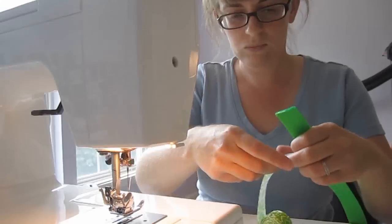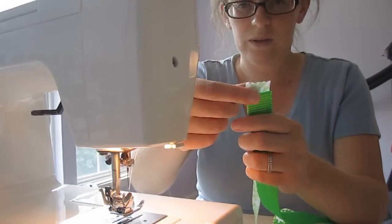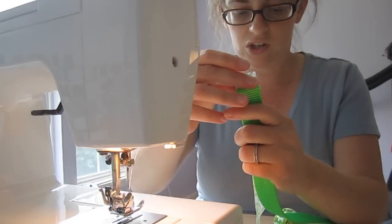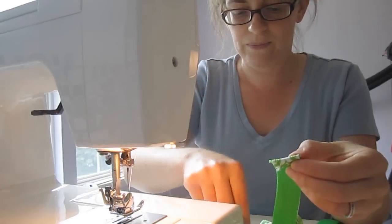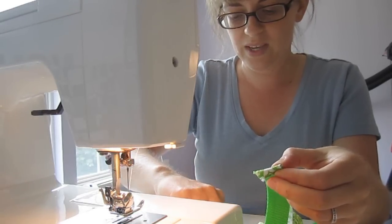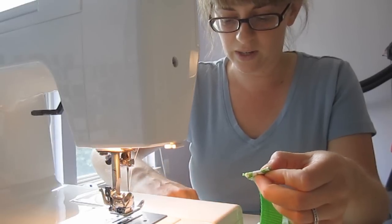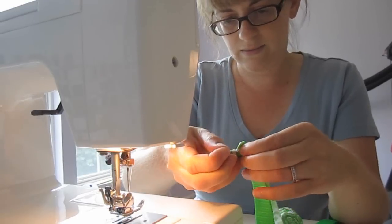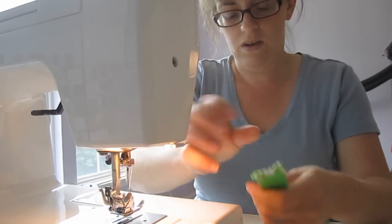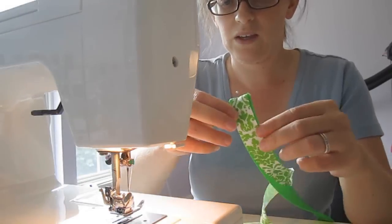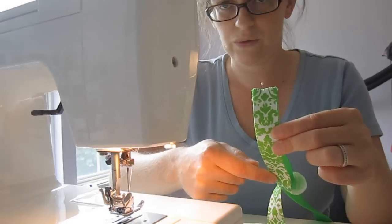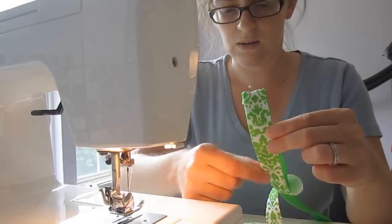Take your ribbon. Fold a little bit of the ribbon over the edge of the webbing. Now, you can pin it or don't pin it. It doesn't really matter. Now, what you're going to do is sew both edges of the ribbon down along the side onto the webbing.